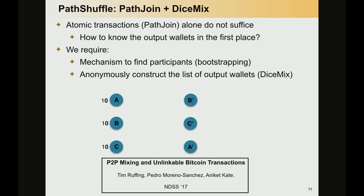So now we take DashMix and PathJoin, put them together, and we have the full PathShuffle — which is a protocol for anonymous payments in the Ripple network today.